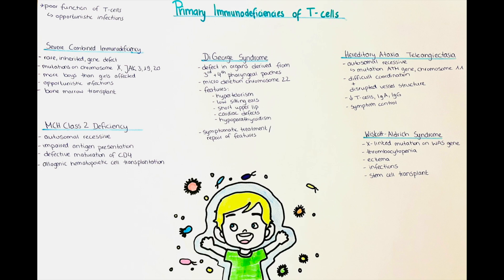An opportunistic infection is an infection by either a bacterium, virus, fungi, or any other commensal organism that usually does not cause disease in healthy individuals, but becomes pathogenic when an individual's immune response becomes lowered. They seize the opportunity to infect when the defenses are low — hence opportunistic.